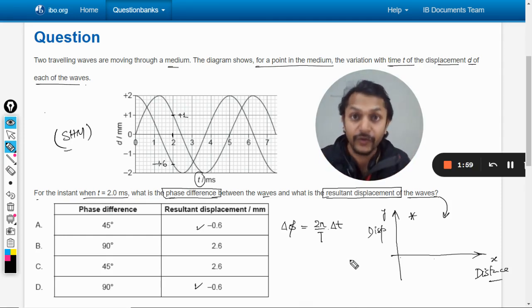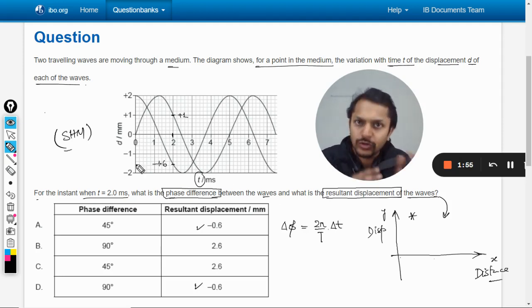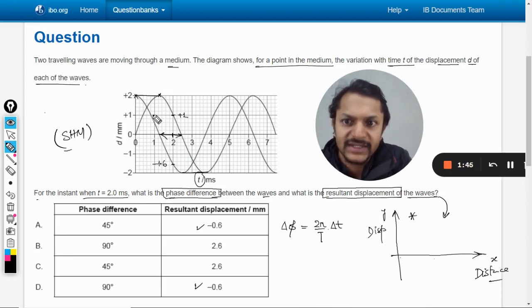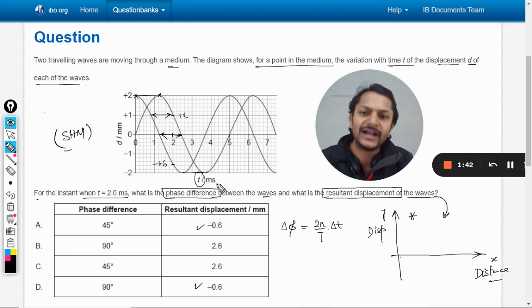2 pi is the total angle for one wavelength and T is the total time period for one wavelength. And delta t will be the difference between the two - for two crests you can say, like what is the delta t here, or two troughs, or like these two points. What is the gap between these two points? You have to find it.